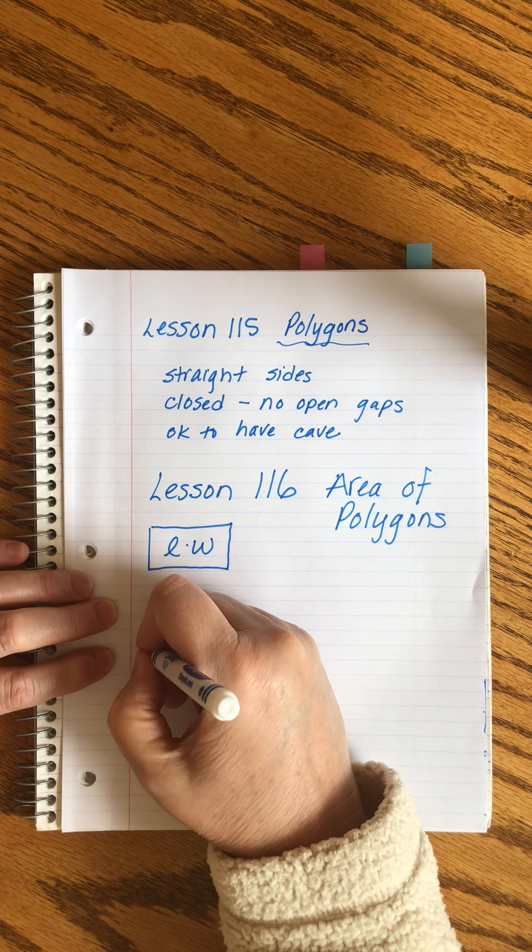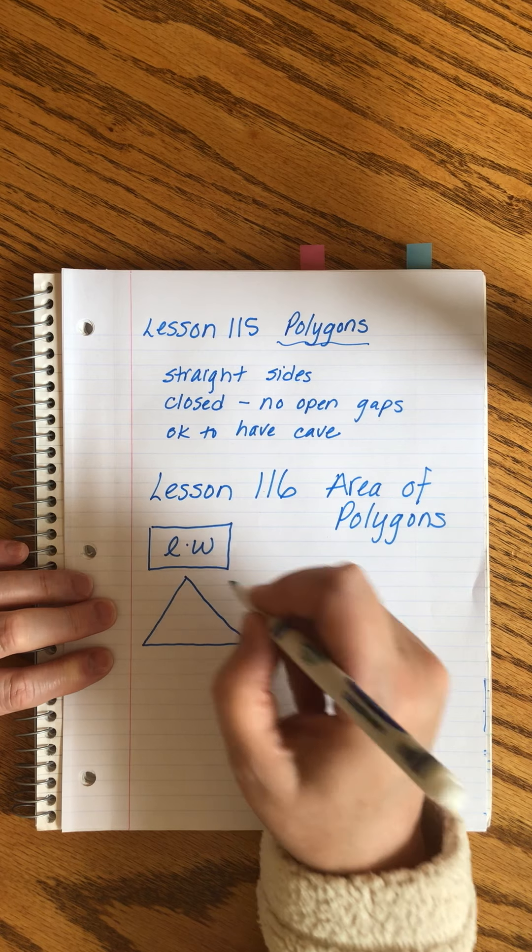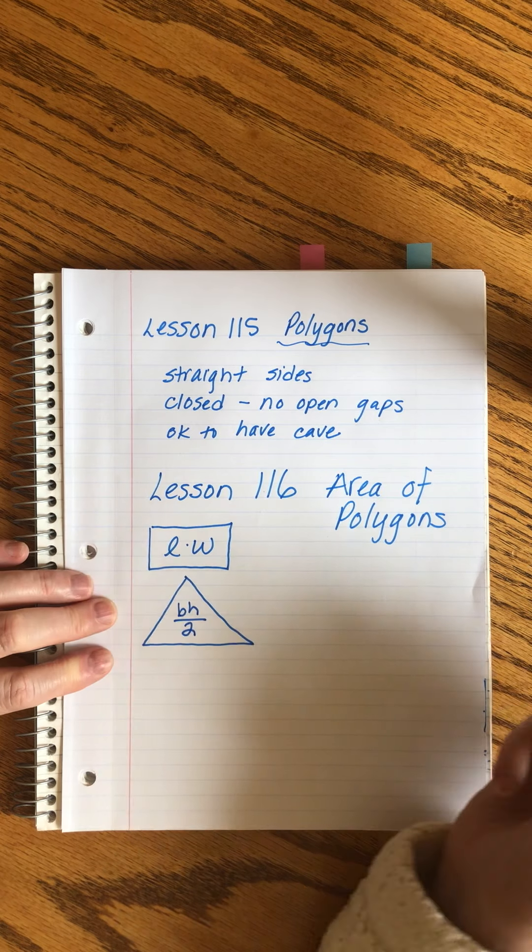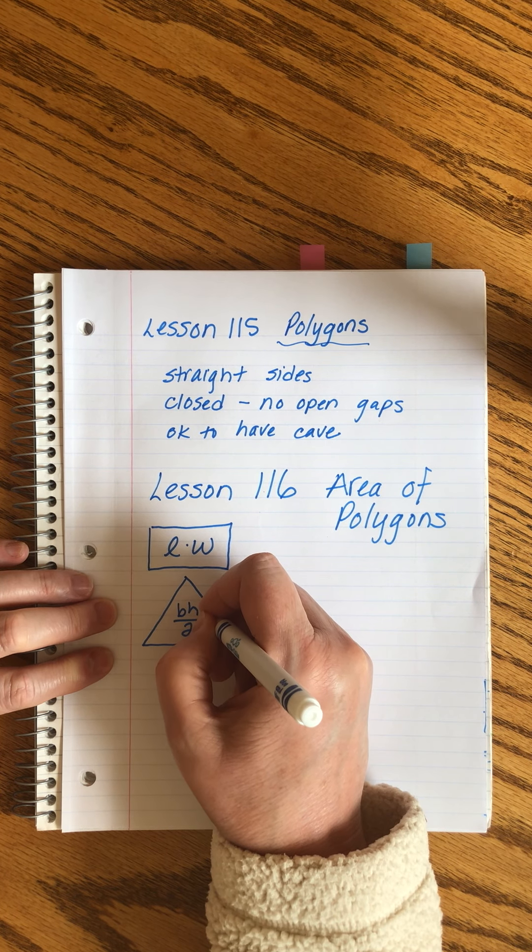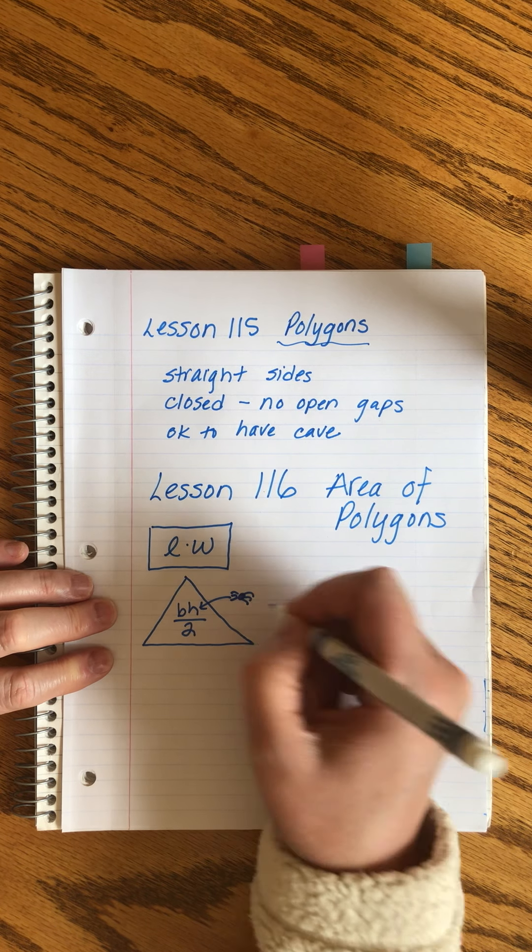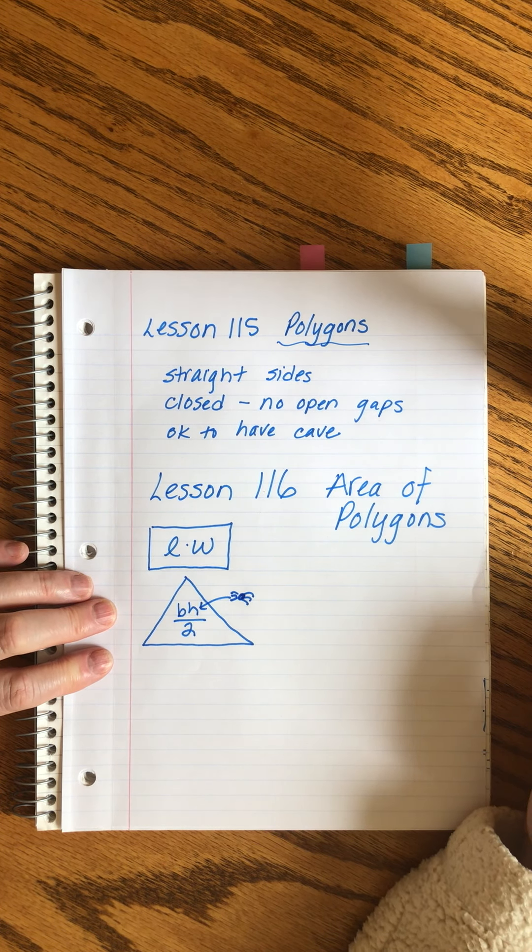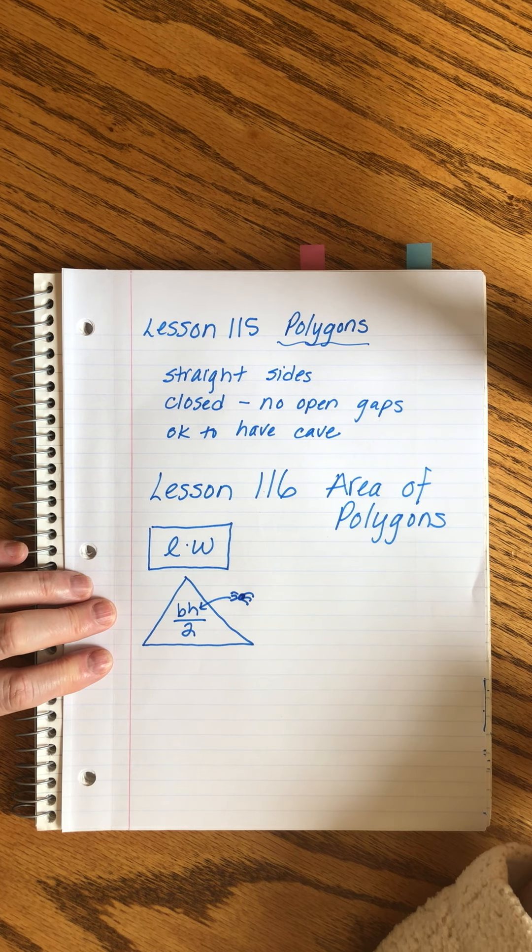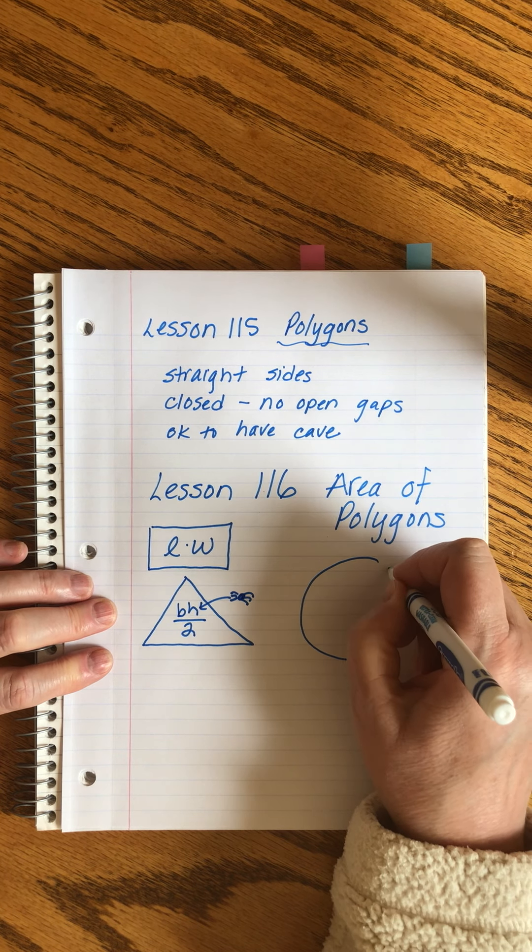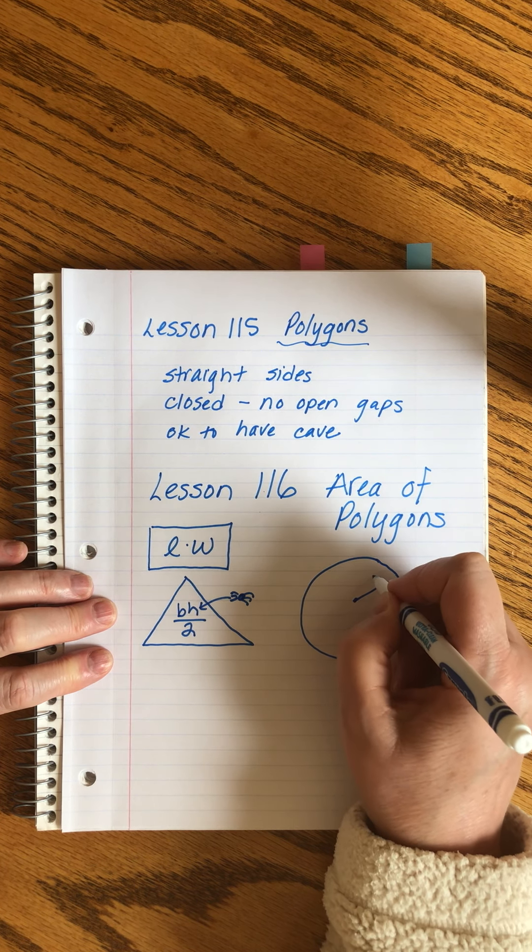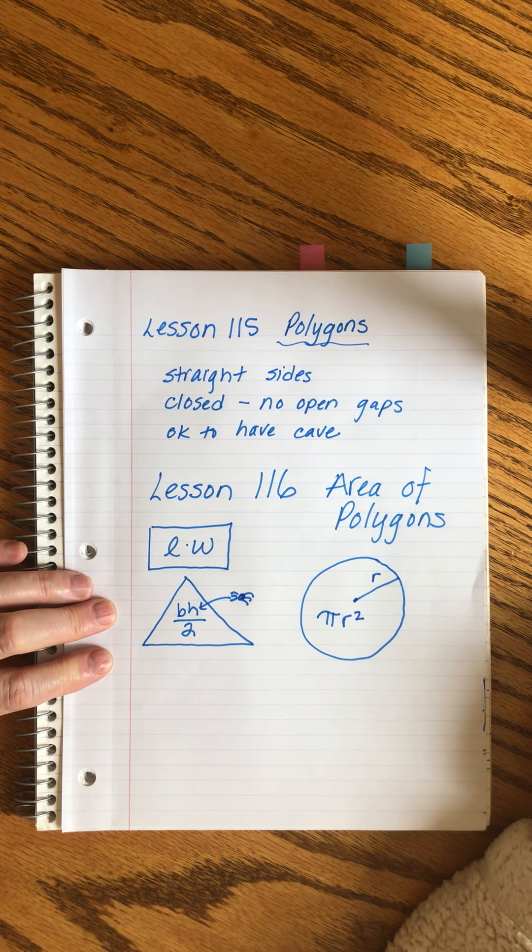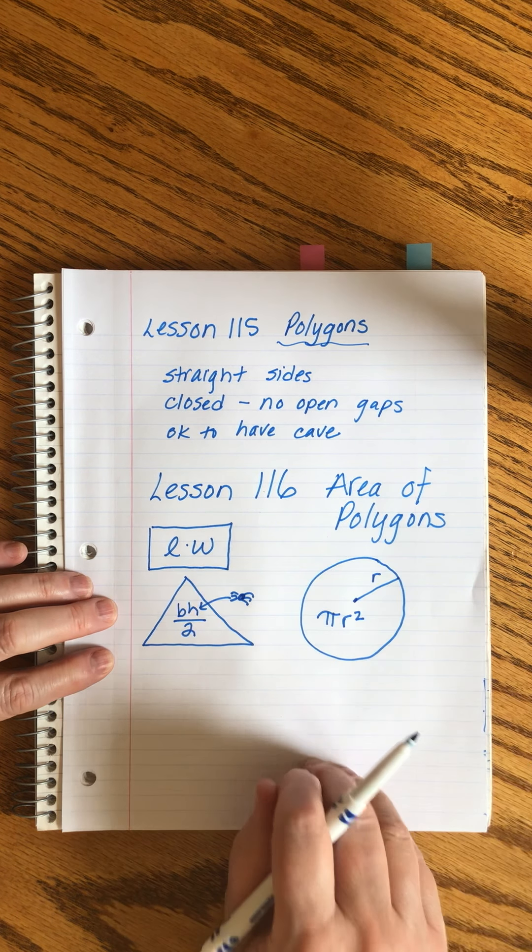You also know for a triangle, it's base times the height divided by 2. And height is measured by the spider that climbs to the top and drops a web line straight down. My spiders always have six legs, I'm really sorry, that's all I can do. And then with circles, the area of a circle with a radius is pi r squared. So these are all area formulas that you know.